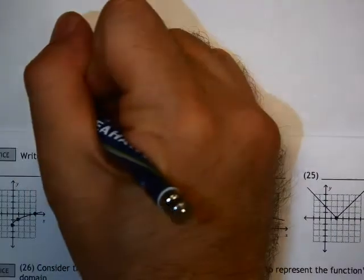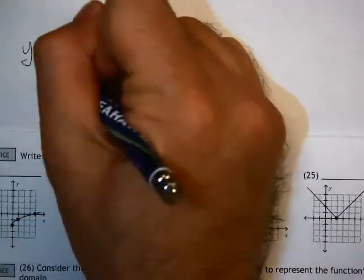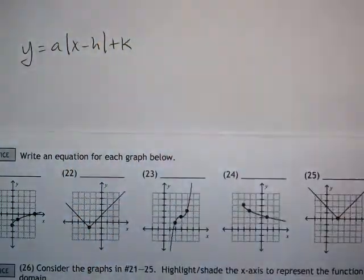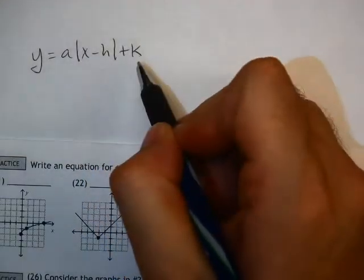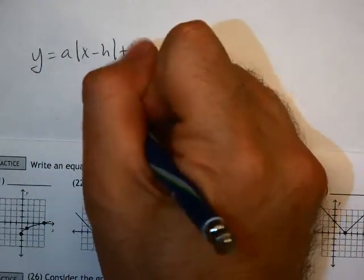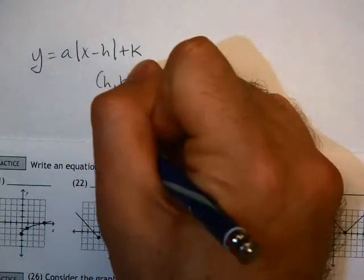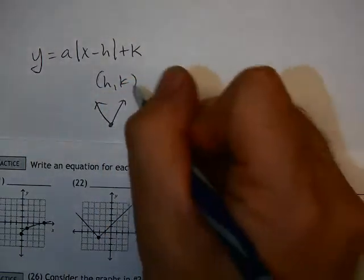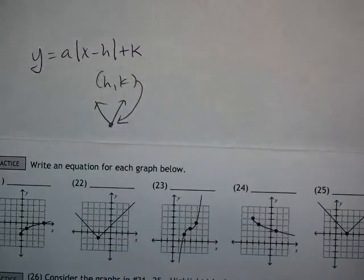One of them is the absolute value graph, which looks like this. There's the general form of the equation, there's your absolute value symbol. Remember that h and k give you, for the absolute value graph, the vertex. So when you're plotting and using that equation, that h and k point gives you the vertex.